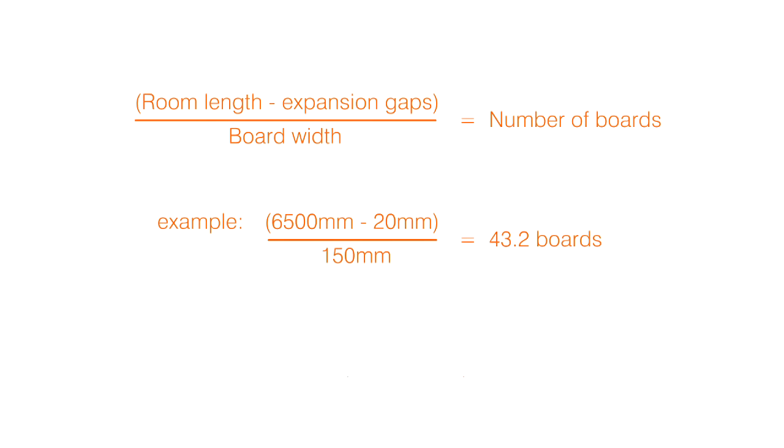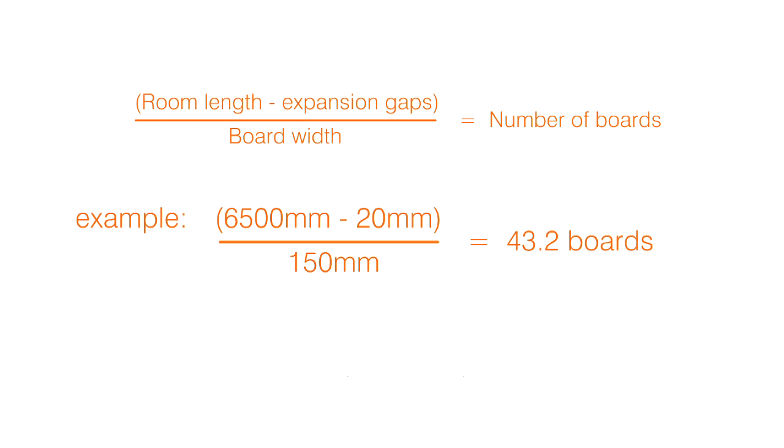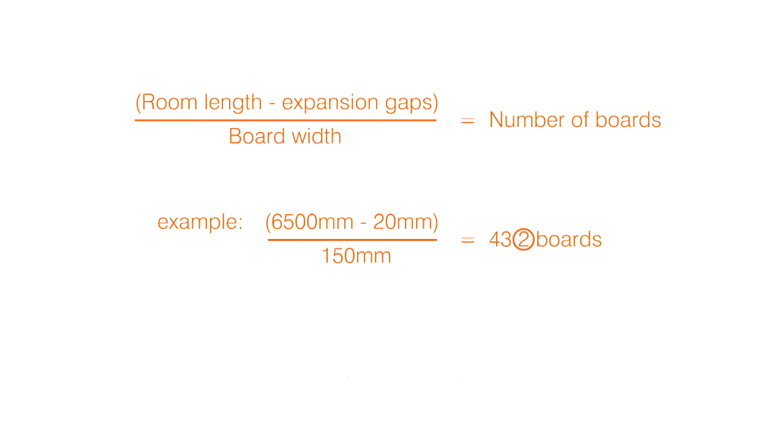Now we need to check that the last row of boards won't be too narrow. You don't want a tiny sliver of board at one end of the room, as it will look untidy and can be hard to cut. We can work this out with a simple sum. Don't forget to factor an expansion gap of 10mm at either end of the room. If you divide the length of the room by the width of your board, it will tell you not only how many boards you'll need, but the leftover width of the final board that you'll have to cut.